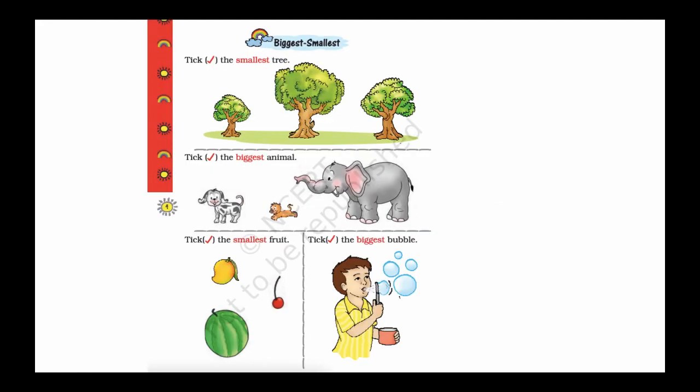Now let's do an exercise from NCRT on biggest and smallest. Take the smallest tree — this tree is the smallest out of the three trees. Take the biggest animal — this one is the biggest animal out of these three. Take the smallest fruit — this cherry is the smallest. Take the biggest bubble — this bubble is the biggest one.